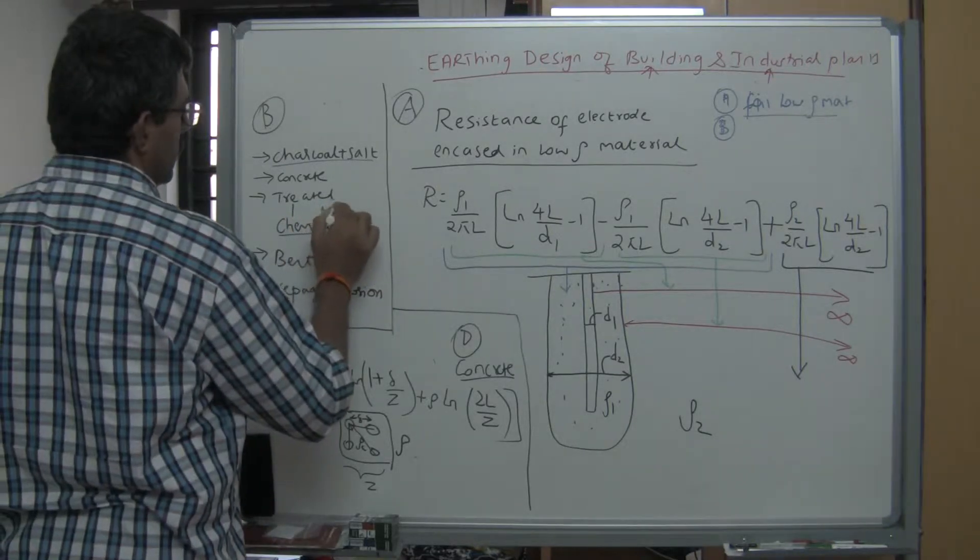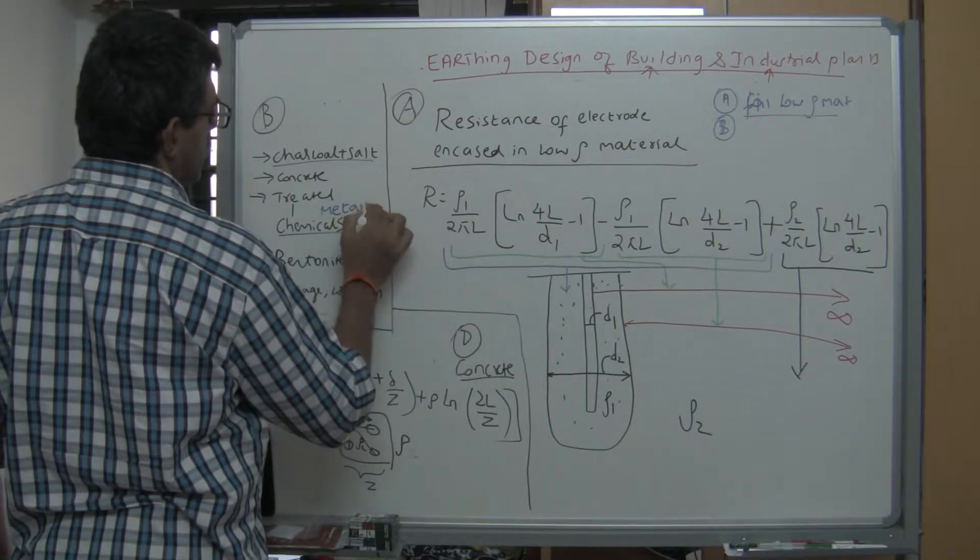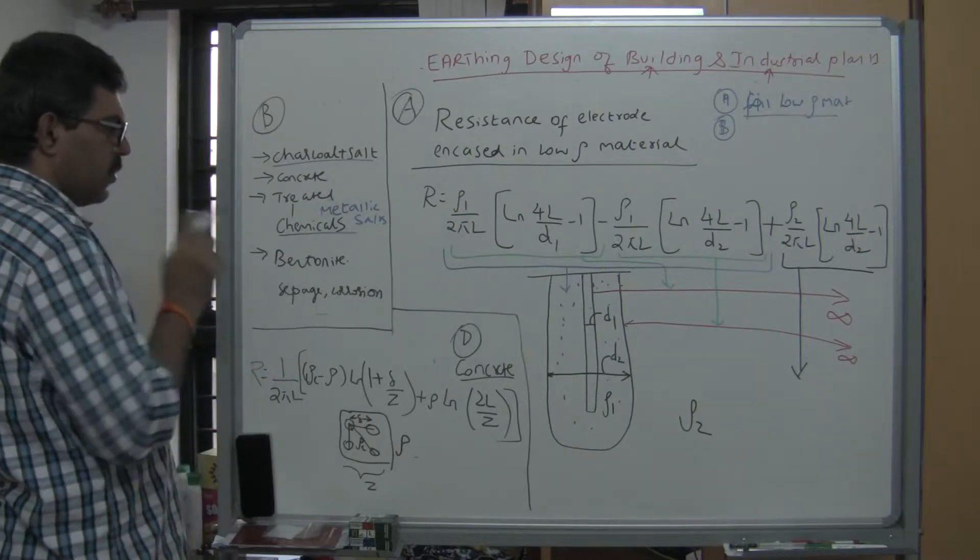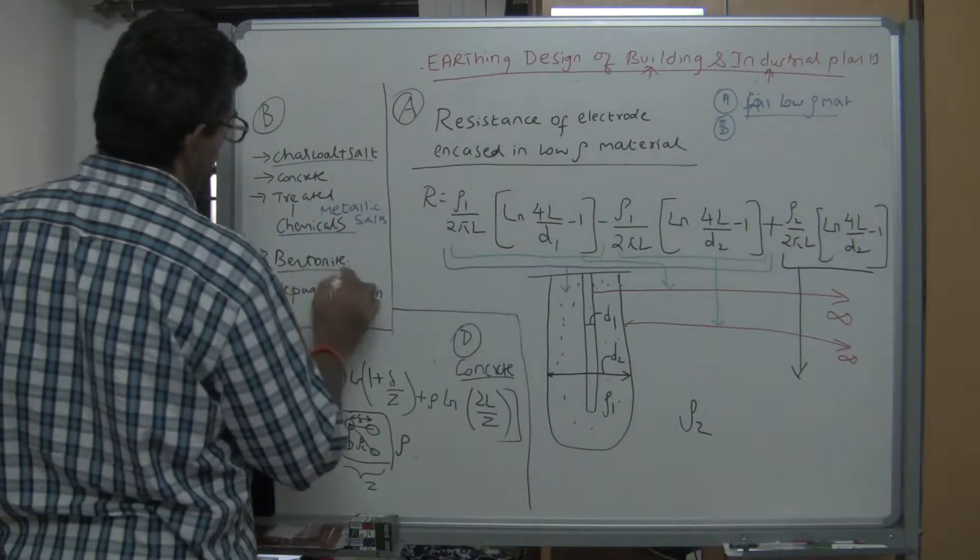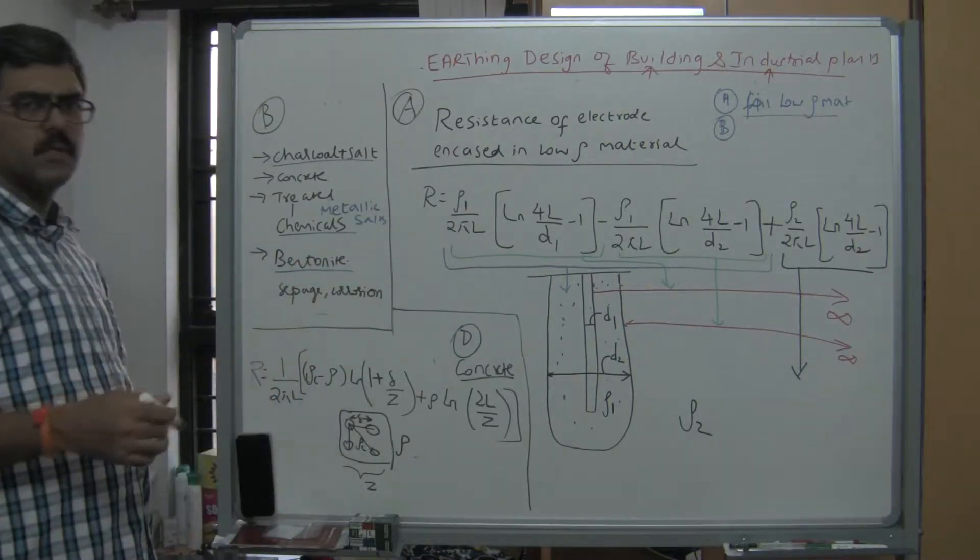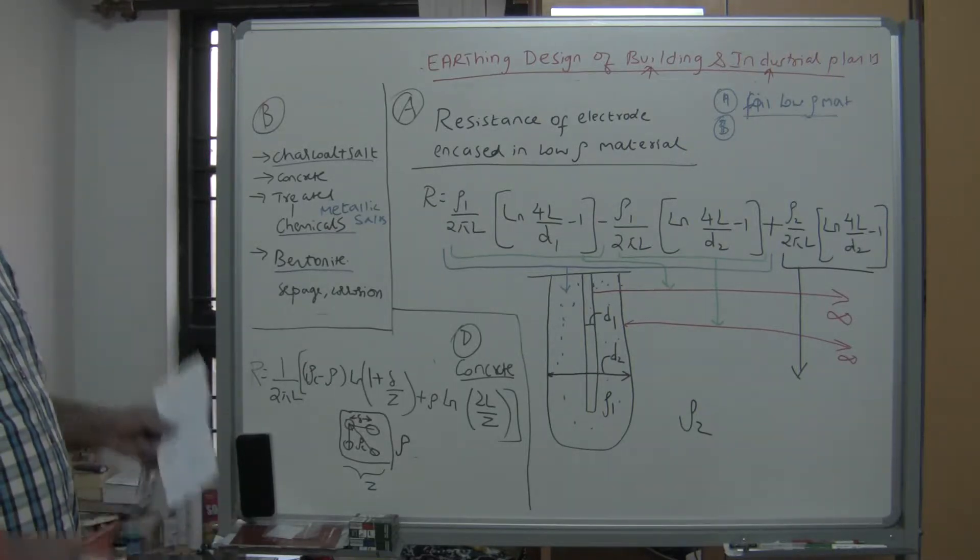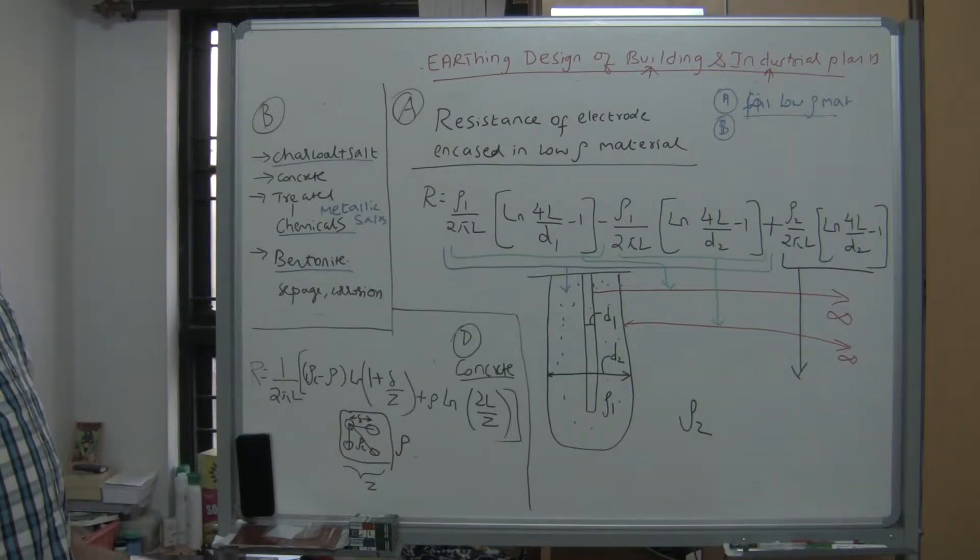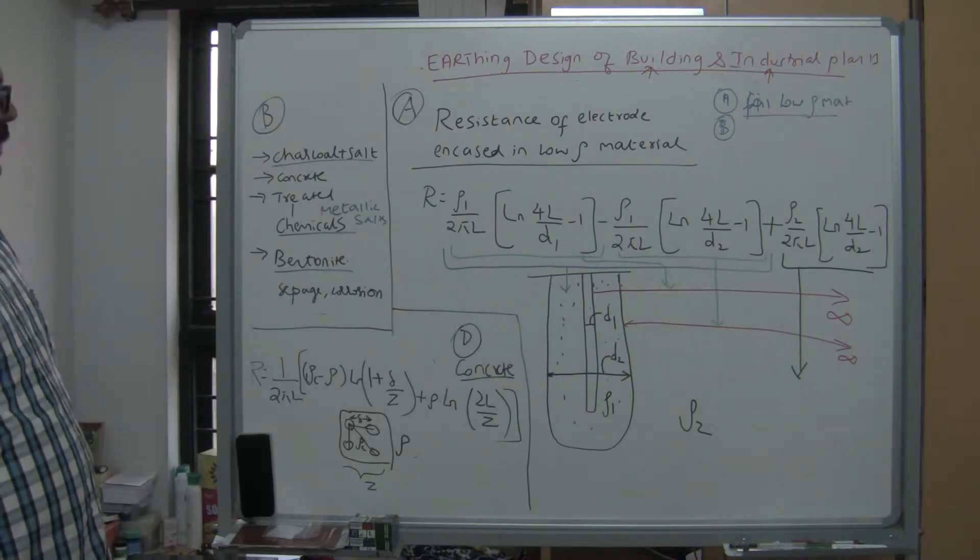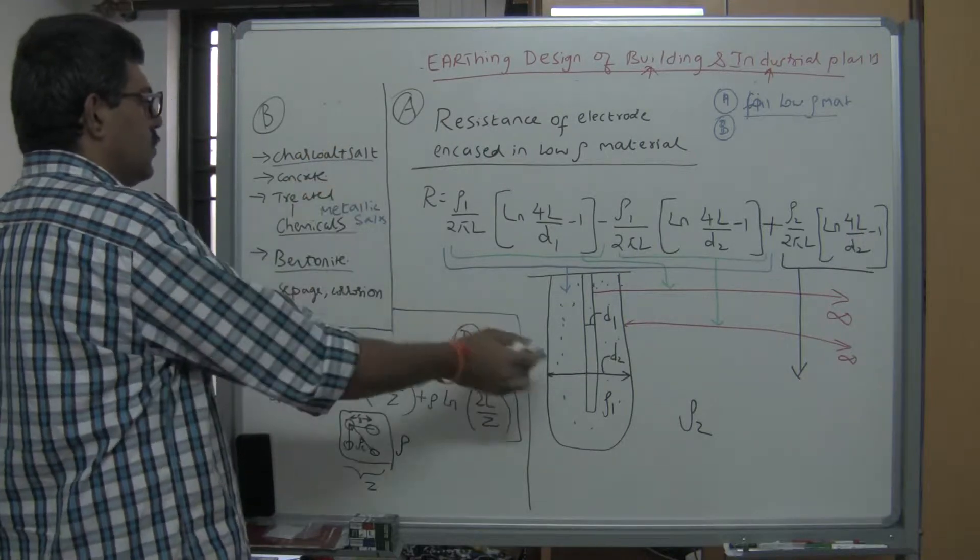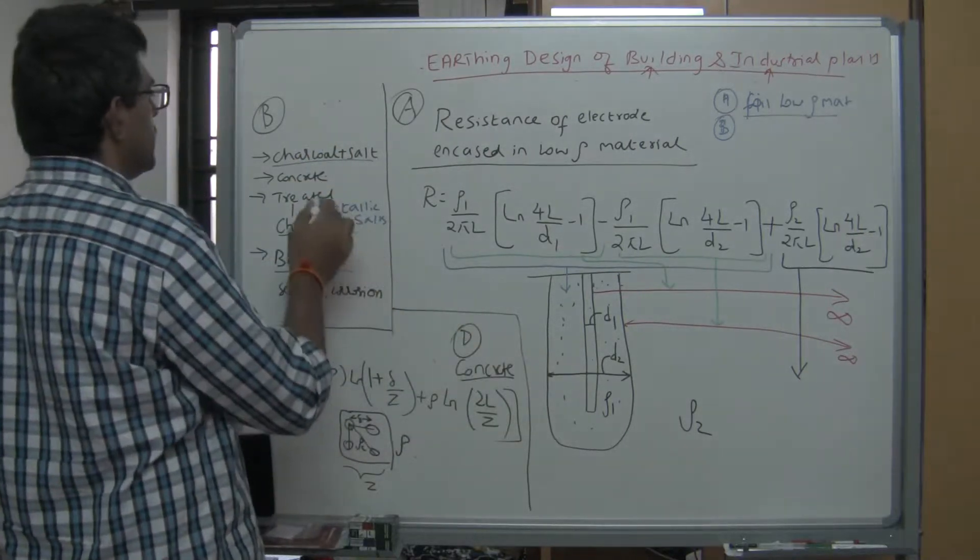One more option is to add bentonite. Bentonite is basically a form of volcanic mud - it has lots of metallic salts naturally in it, so the resistivity will be very low. When you add something around your electrode, we call it a treated earth pit.